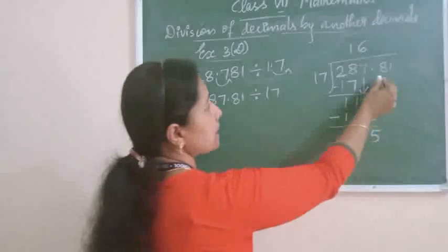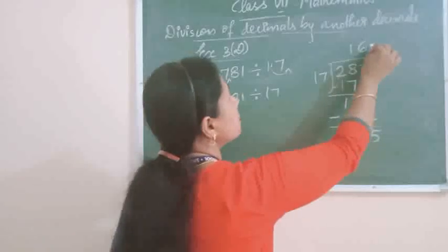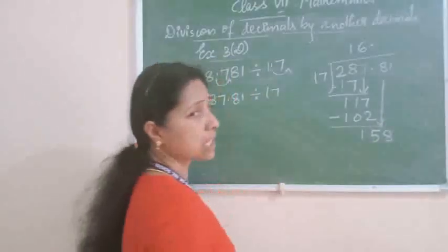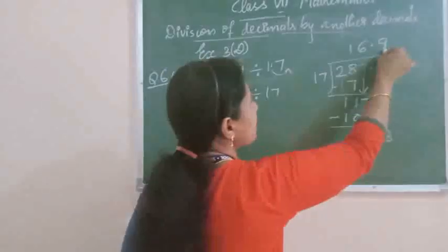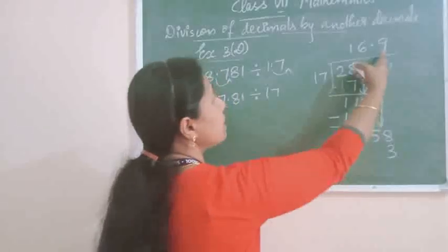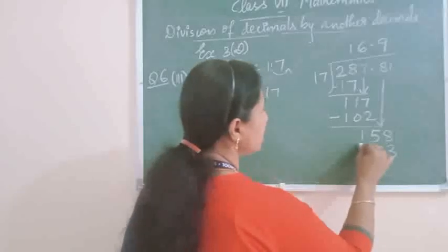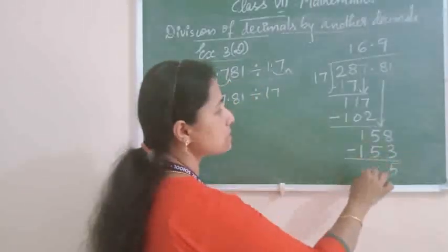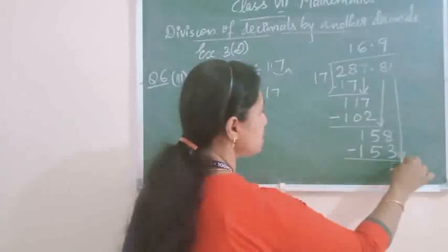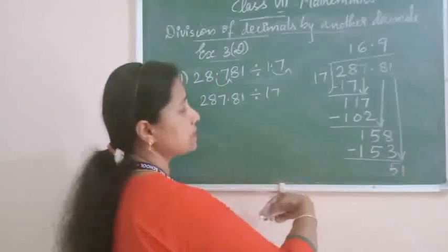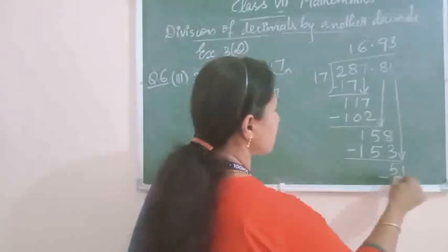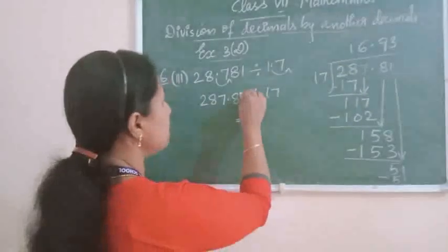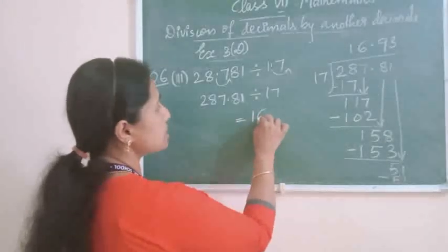Then you take the next digit. But this next digit, 8, is given after the point. So before bringing that digit down, in the quotient also you have to put the point. Now take 8 with the 15, making 158. 158 divided by 17 — 17 nines are 153. Subtraction: 8 minus 3 is 5, 5 minus 5 is 0, 1 minus 1 is 0. Take the next digit, which is 1, giving 51. 51 divided by 17 — 17 threes are 51. The remainder is 0, so the division is completed. 287.81 divided by 17 is equal to 16.93.